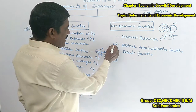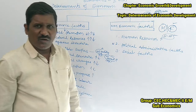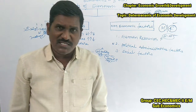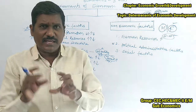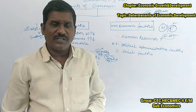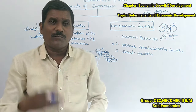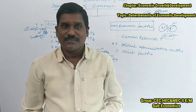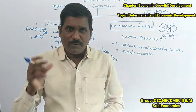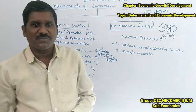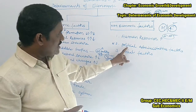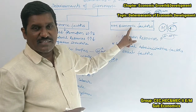The second non-economic factor is political administration. What policies does the government have? What administrative factors and precautions are taken by the government to reduce poverty and unemployment? How is the government providing more employment opportunities? The benefits provided by the government and how people achieve higher income — these are all political and administrative non-economic factors that lead to economic development.